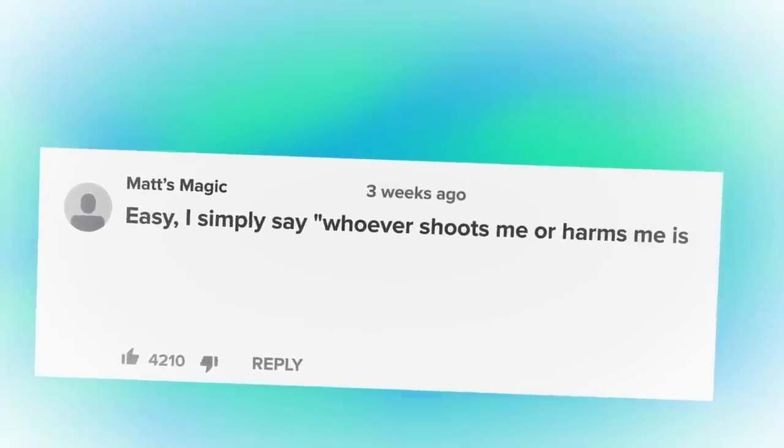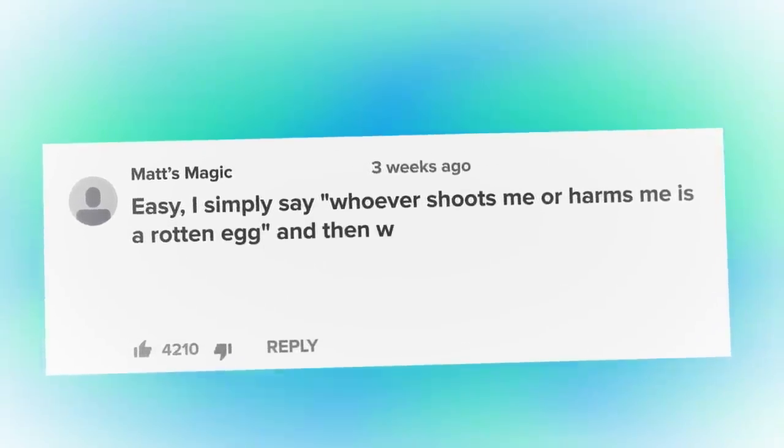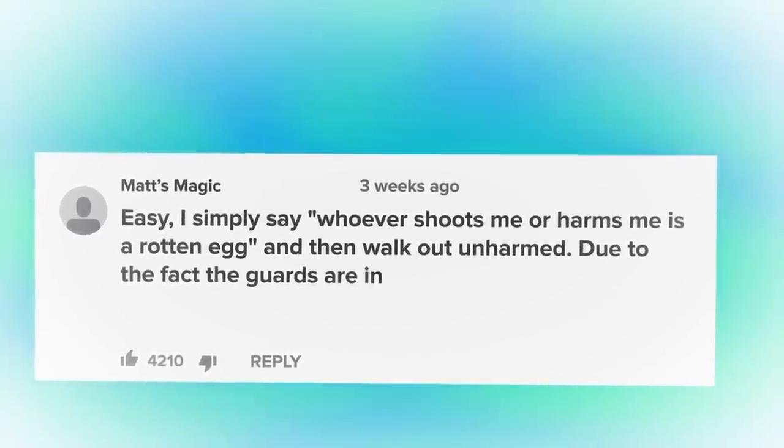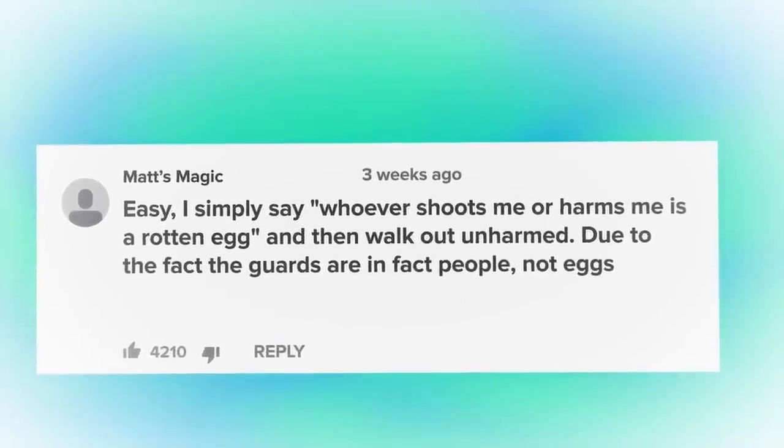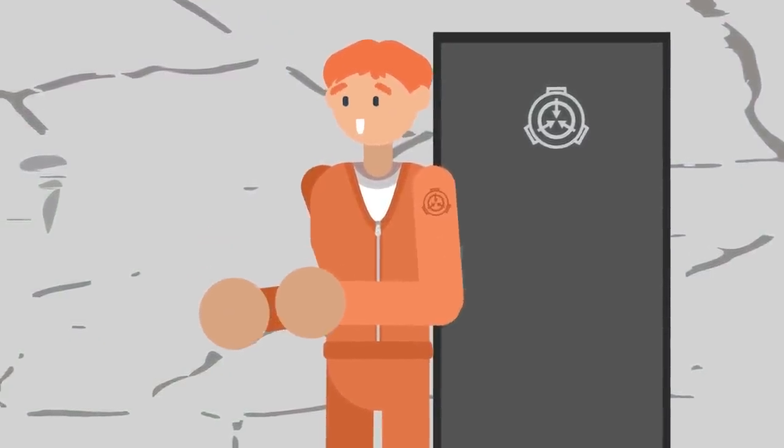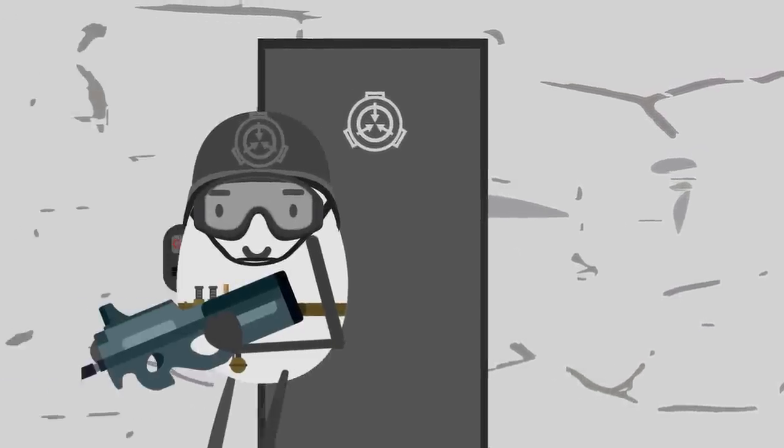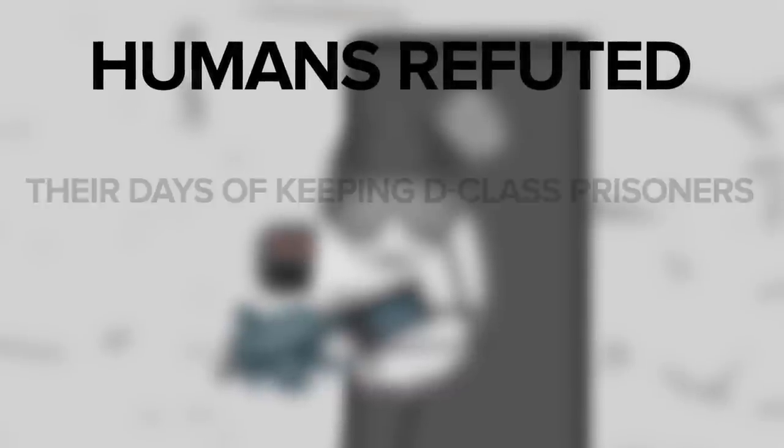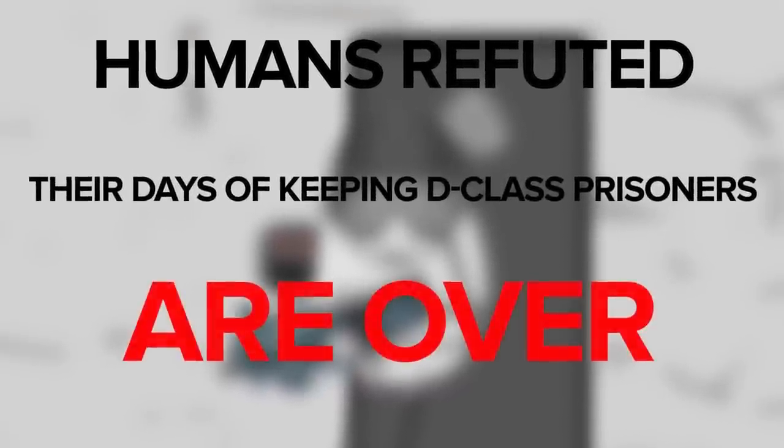Matt's Magic said, 'Easy. I simply say, whoever shoots me or harms me is a rotten egg, and then walk out unharmed, due to the fact the guards are in fact people, not eggs.' That's it. You've cracked the code. Unless the SCP Foundation starts hiring eggs as guards or creates some sort of unholy human-egg hybrid to staff their halls, we're looking at you, Humans Refuted, their days of keeping D-Class prisoners are over.